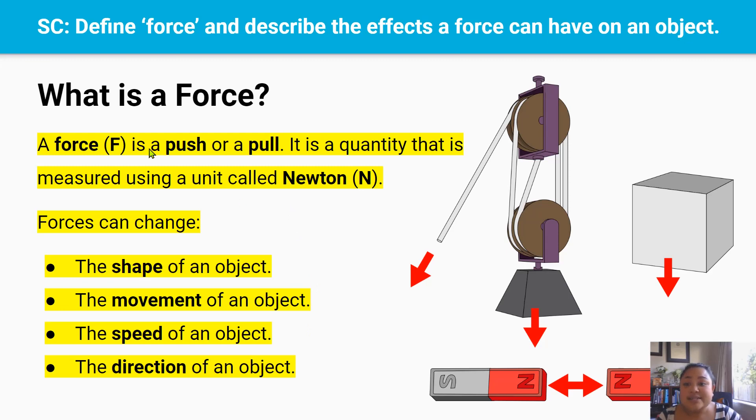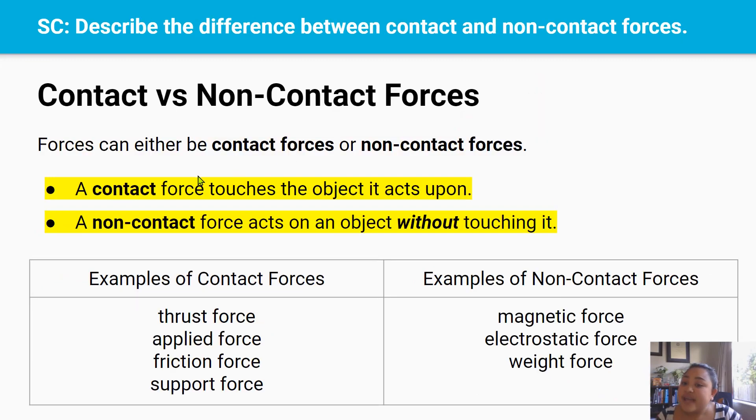So what is a force? Well, a force is a push or a pull. And it's a measurement or a quantity that's measured using a unit called Newton. And the symbol for Newton is N. Newton is actually the surname of a person called Isaac Newton. And forces can change the shape of an object, they can change how an object moves, they can change the speed of that object, or they can change the direction that object is traveling.